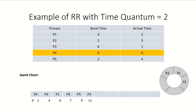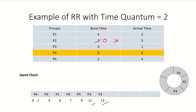P3 is scheduled from time nine to eleven, leaving a remaining time of four. The scheduler then gives the processor to P2, and P3 joins the tail of the ready queue. P2 runs from eleven to thirteen, completing its burst time and exiting the system.